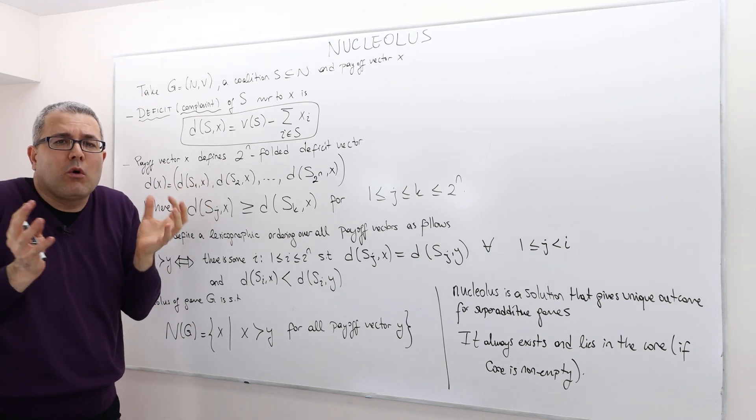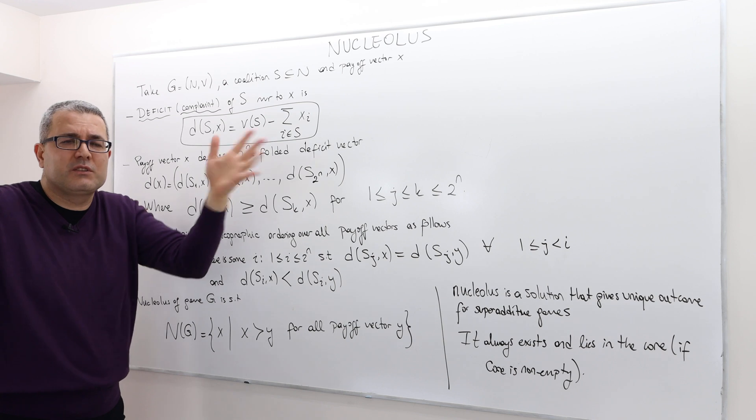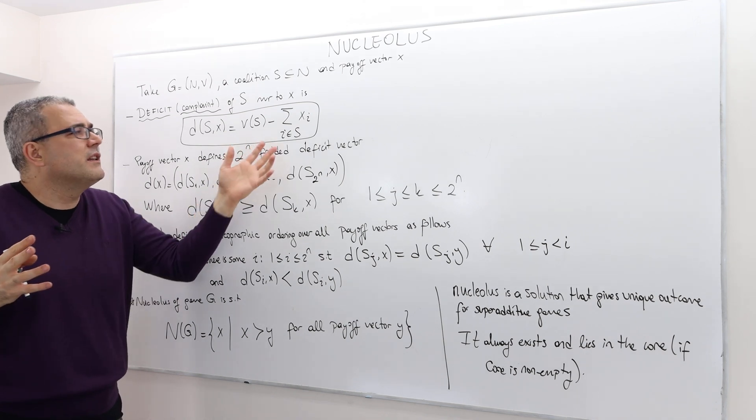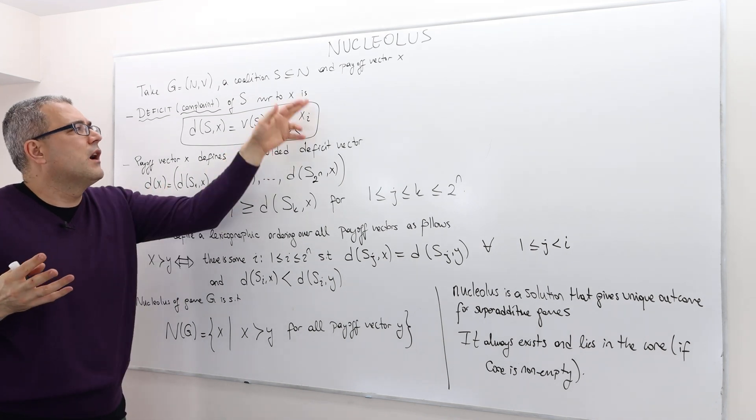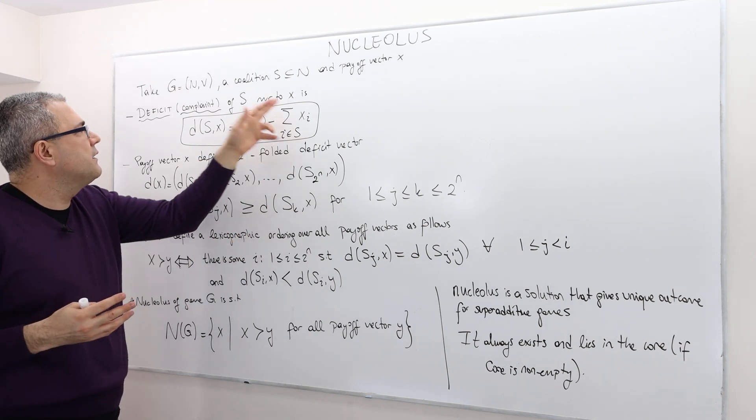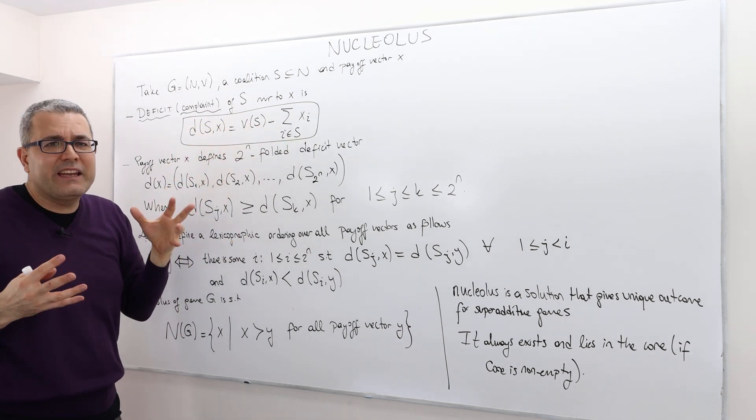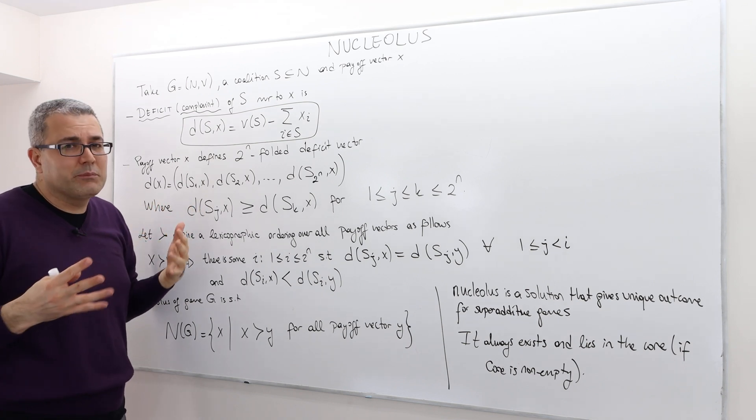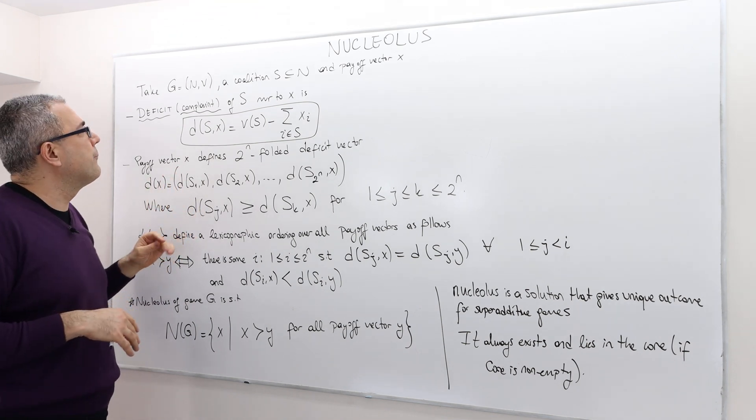If this coalition stays alone by itself, excludes everybody else, then they couldn't achieve more than what this payoff vector is offering them. So therefore, if the deficit is negative, that's not a complaint. That's a good thing.